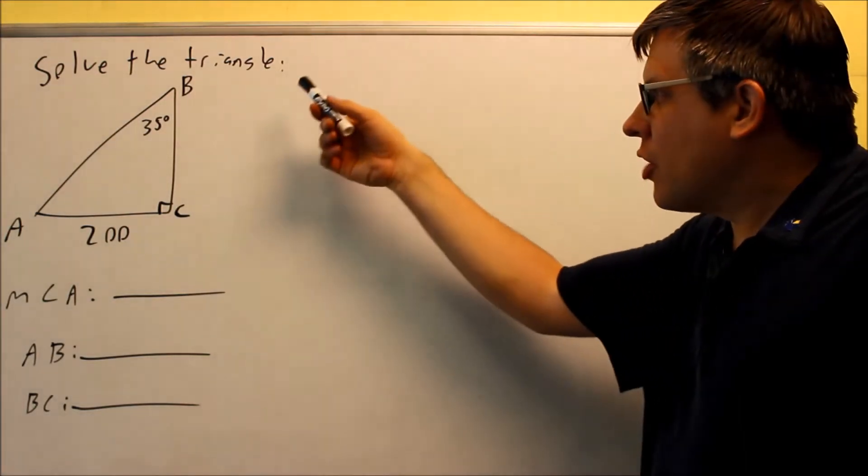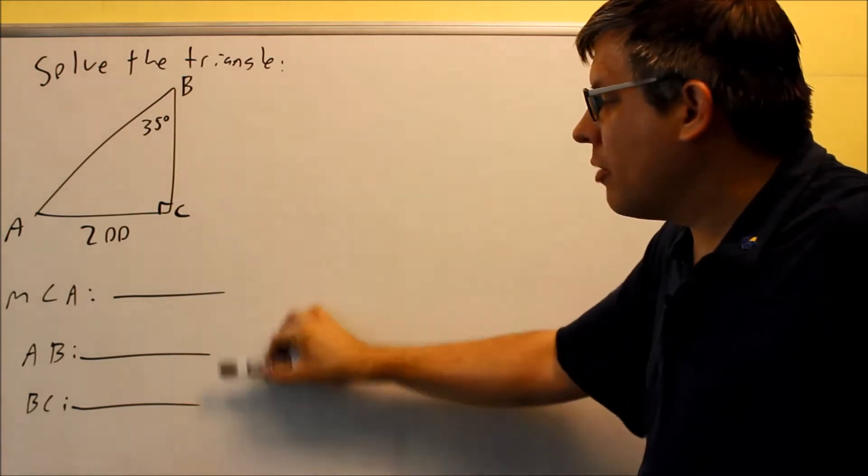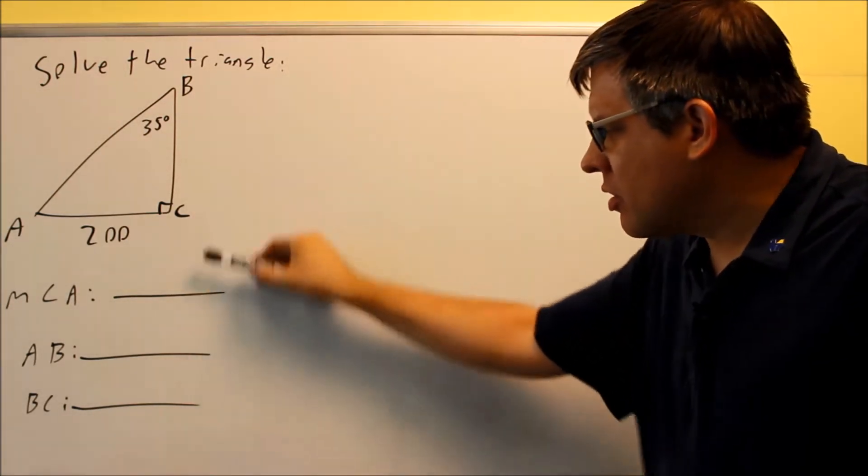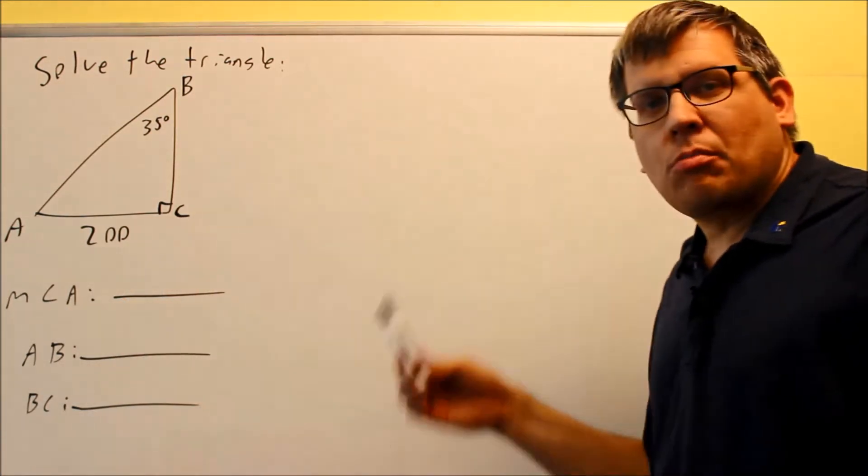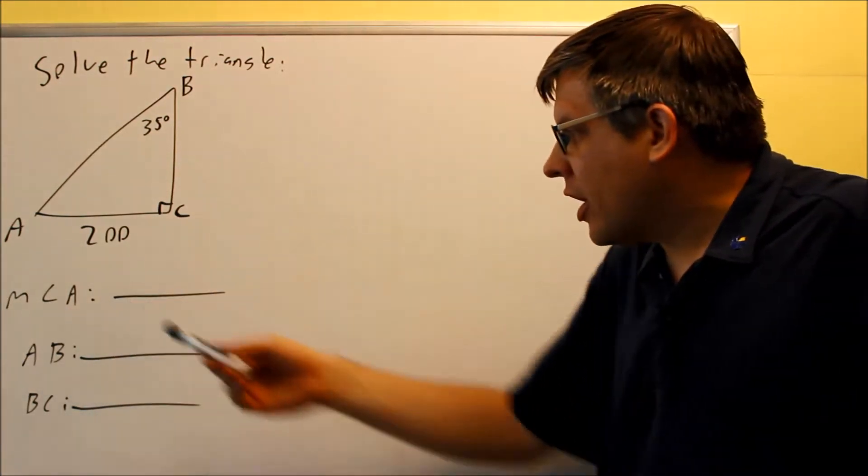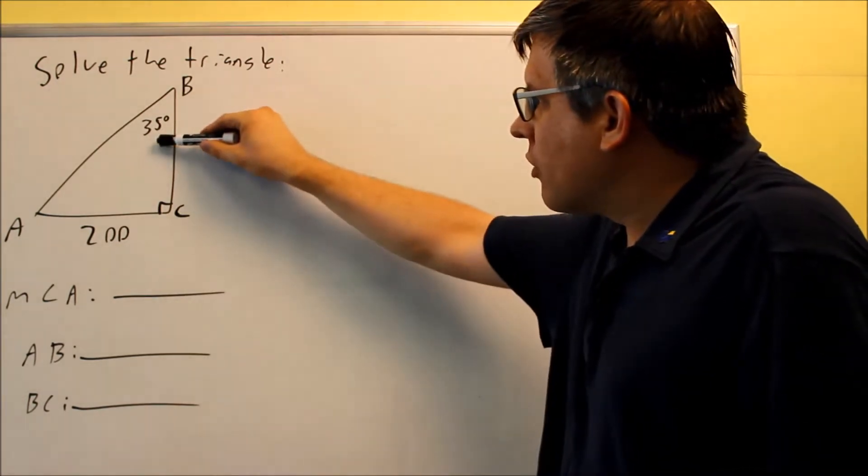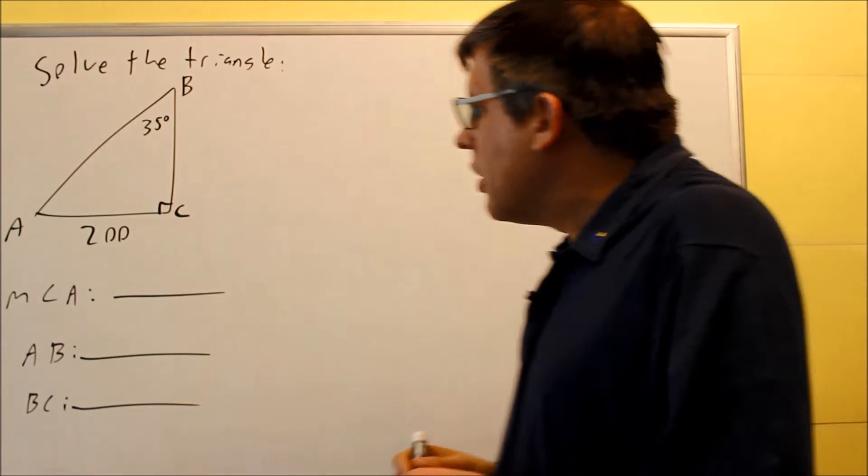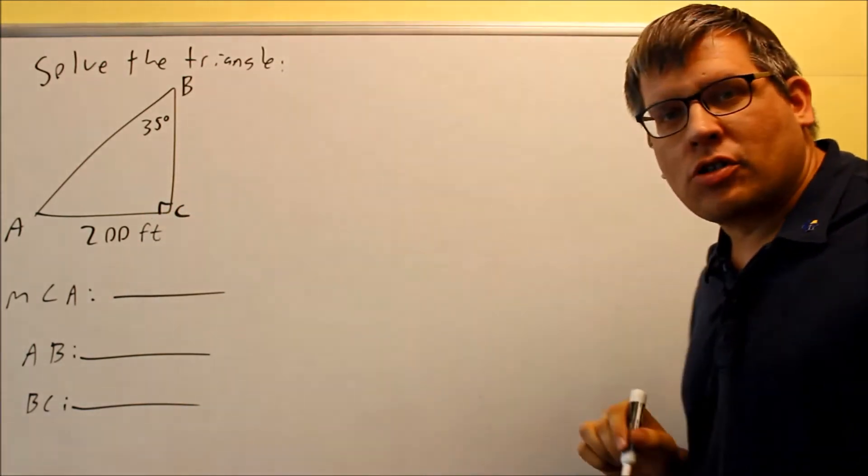This problem asks us to solve the triangle, which means finding all the missing sides and angles. We need to find angle A, side AB, and side BC. We're given 35 degrees here and 200 feet.